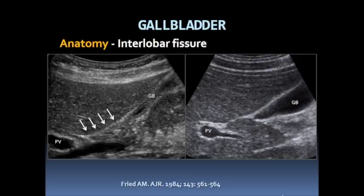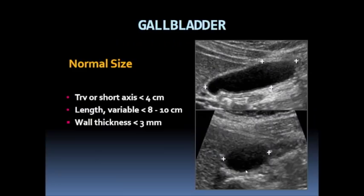On a longitudinal view, the interlobar fissure connects the gallbladder to the right portal vein, delineated by a linear echogenic line. In 70% of scans, you will see the interlobar fissure. The upper limit for the normal gallbladder is 4 centimeters in transverse or short axis, which is the most important measurement when assessing gallbladder size. The gallbladder length can be quite variable, but the upper limit of normal is typically 10 centimeters.